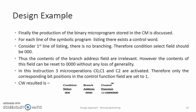We have to now consider the production of binary microprogram which has to be stored in the control memory. As mentioned earlier, for each line of the symbolic program listing there is a control word which exists. For example, consider the first line of the symbolic listing shown previously. The instruction introduces no branching. Therefore, the condition select field should be 000. Thus the contents of the branch address field are irrelevant. However, the contents of this field can be reset to 0000 without any loss of generality.